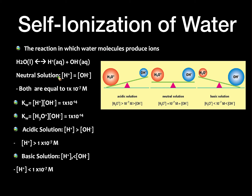A neutral solution will occur when we have the hydrogen ion concentration being equal to the hydroxide ion concentration. For an acid, you can use H⁺ or H₃O⁺ — they're interchangeable.